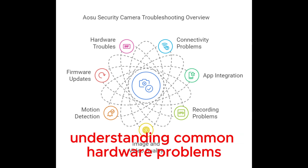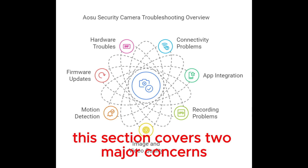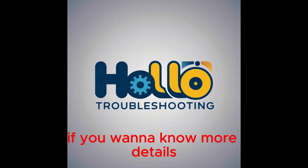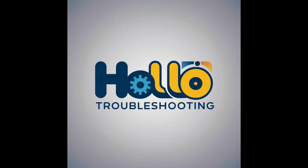Hardware Troubles: Encountering hardware troubles with your IOSU security camera can be frustrating. These issues often disrupt the smooth functioning of your surveillance system. Understanding common hardware problems helps in timely resolution. This section covers two major concerns: physical damage and weather-related problems. For more details, you can visit hellotroubleshooting.com.